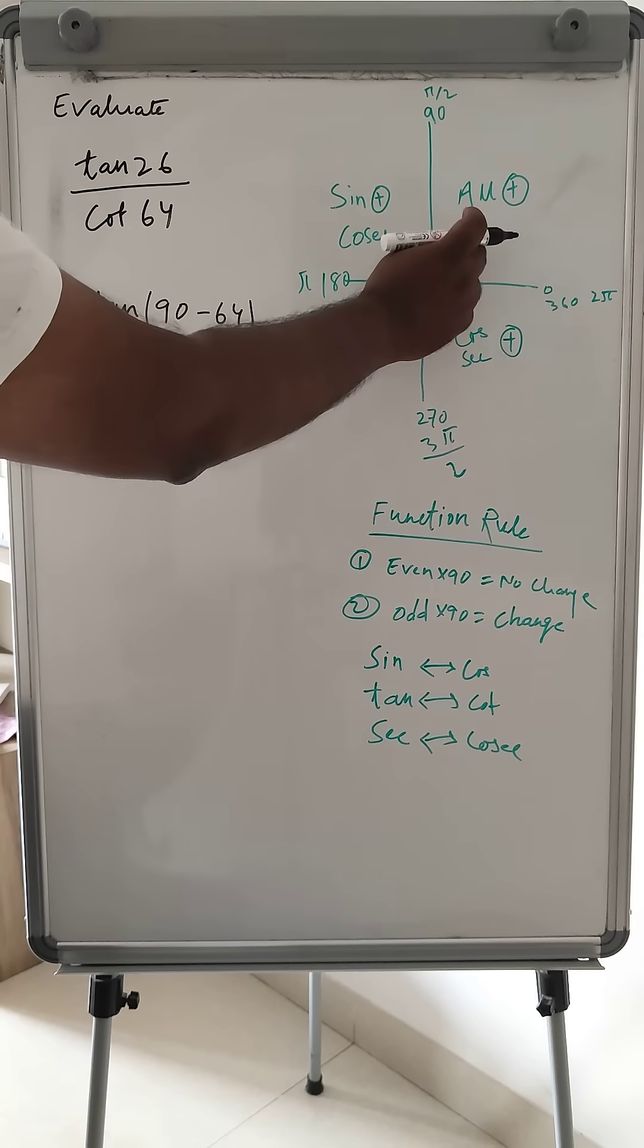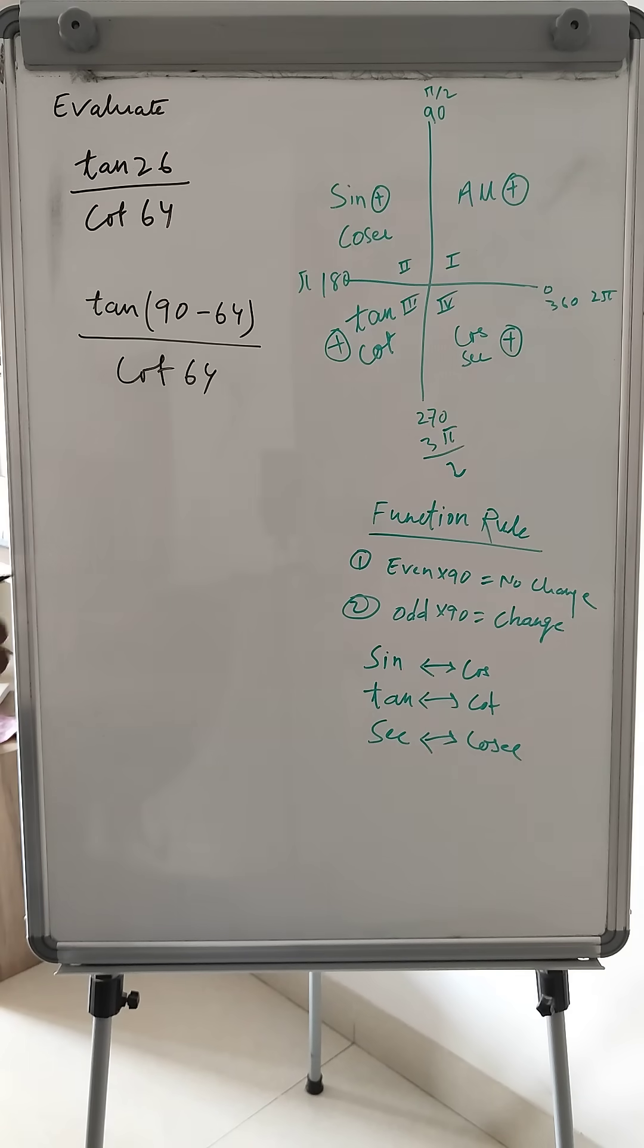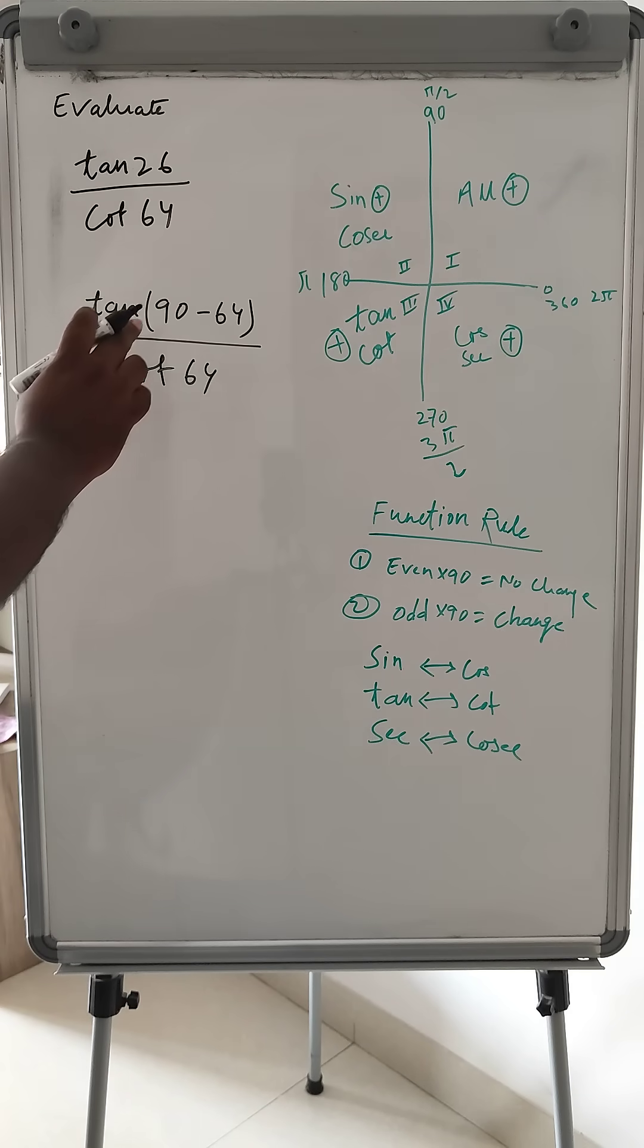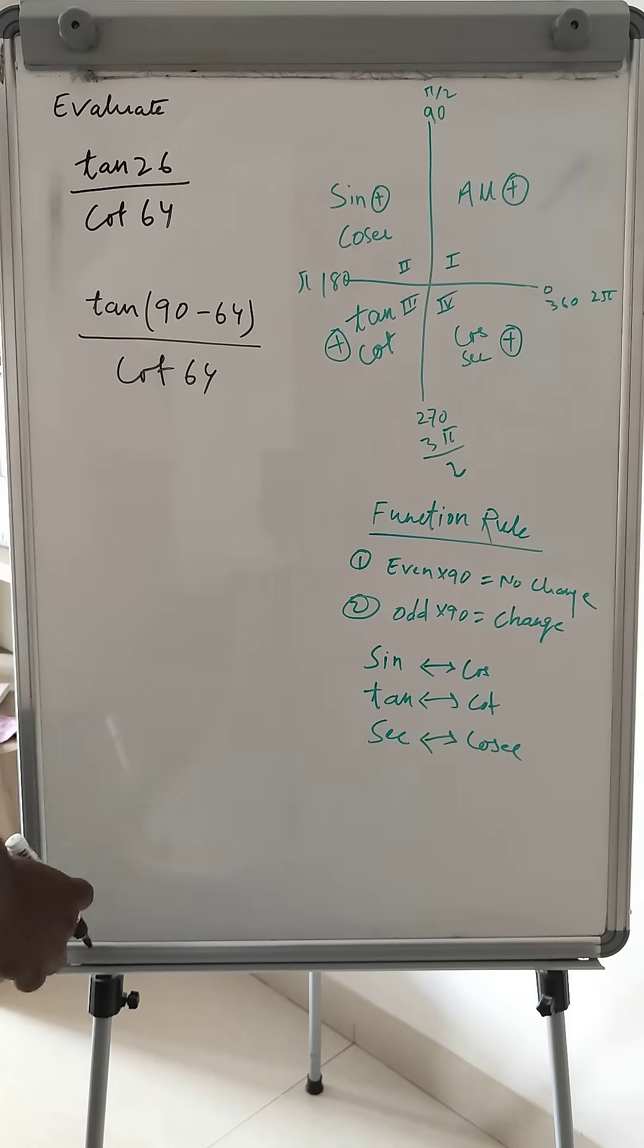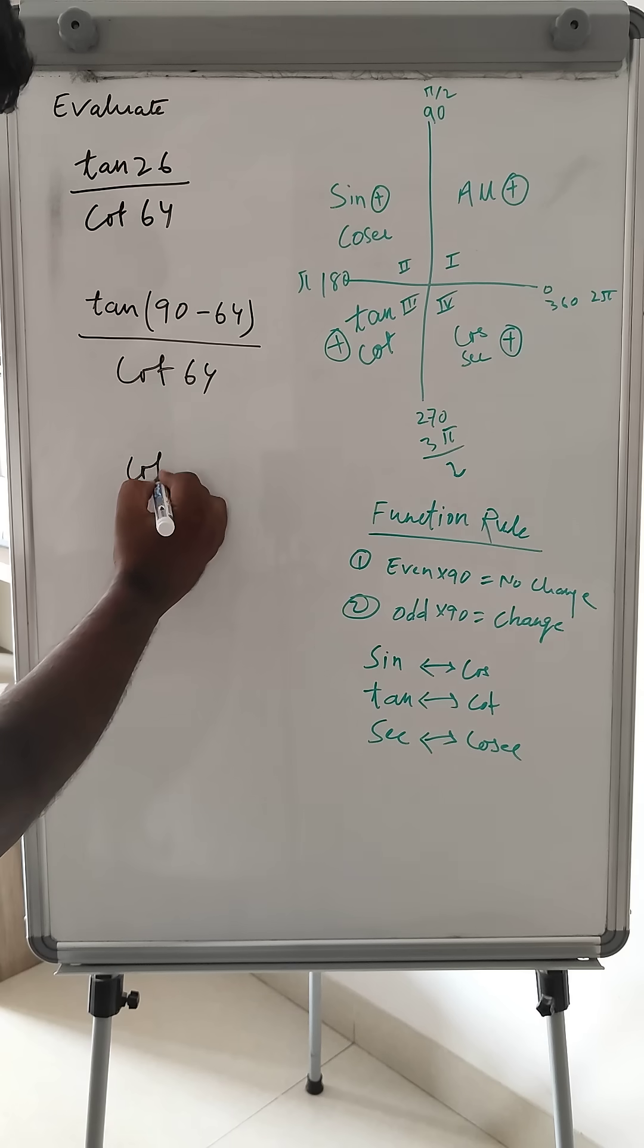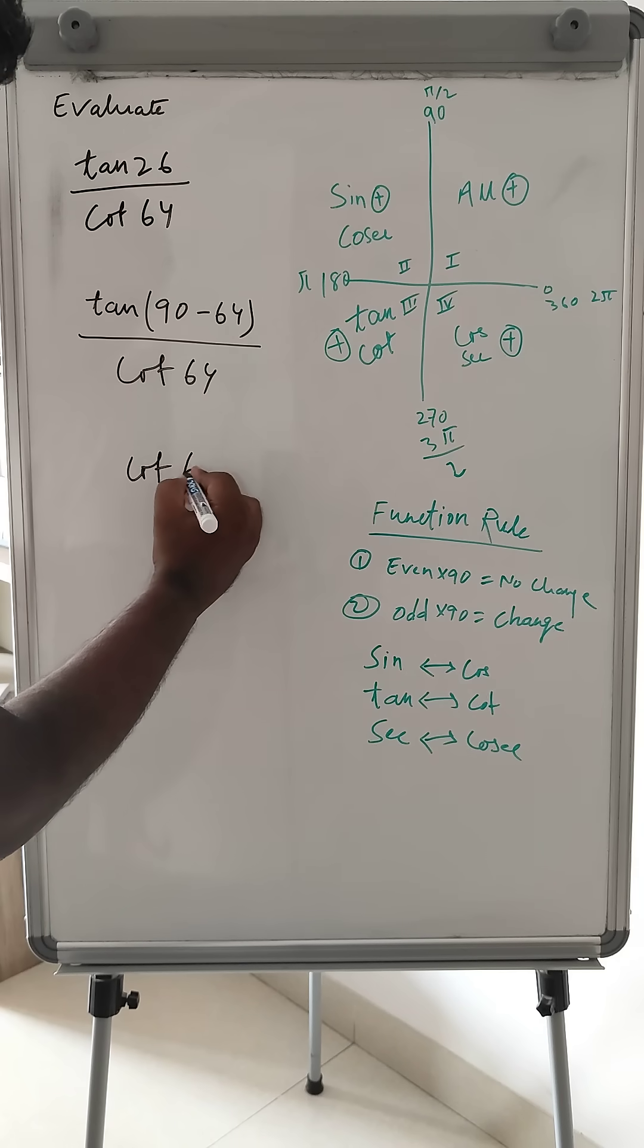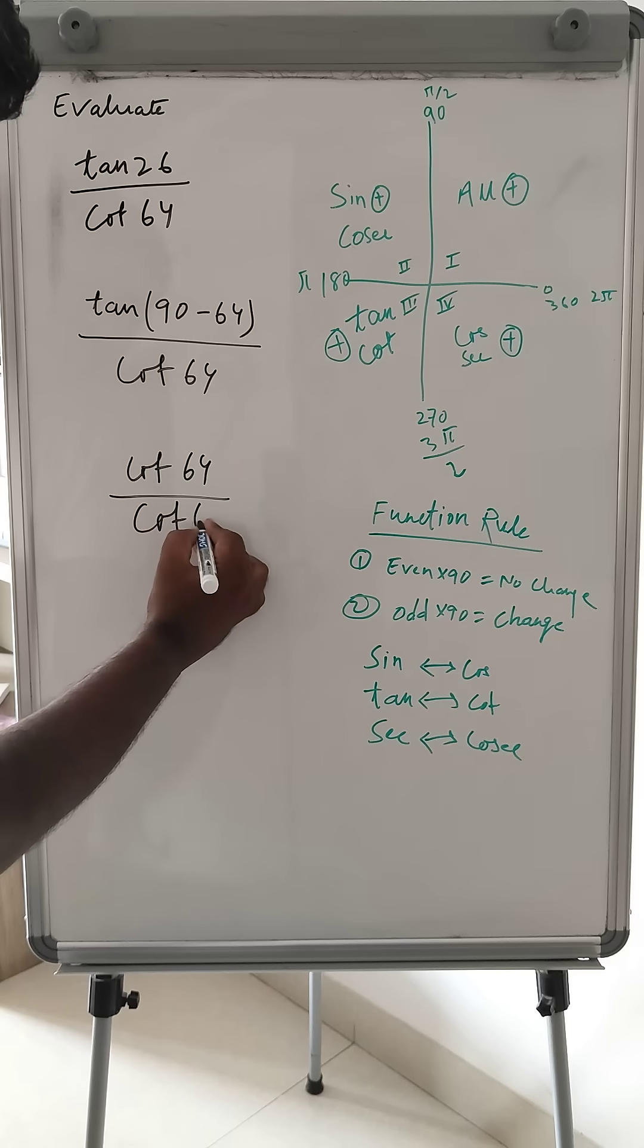90 minus 64 is in first quadrant where all are positive. Since 90 is a multiple of odd, it will change - change means tan changes to cot. So this will change to cot, and now this is 64.